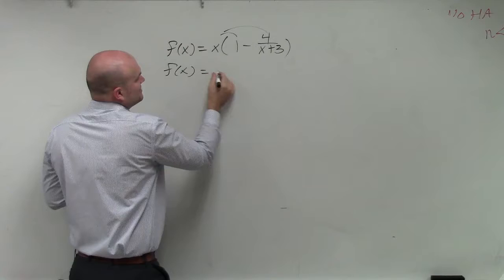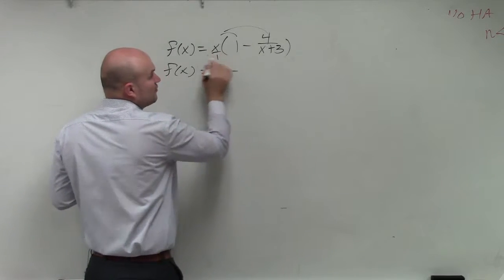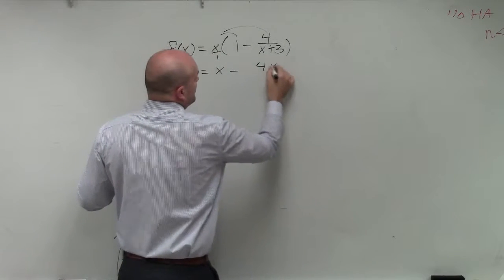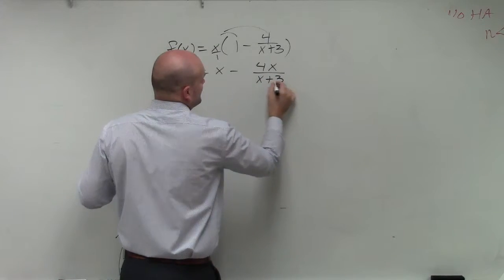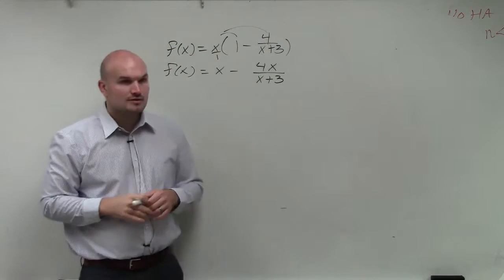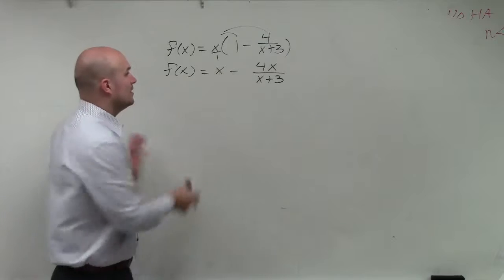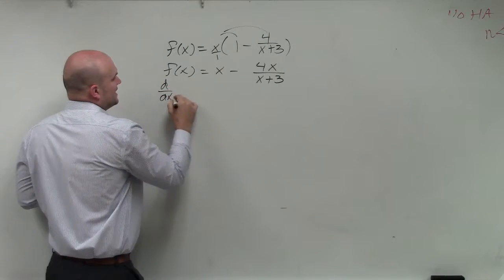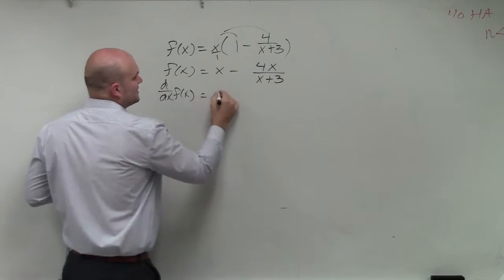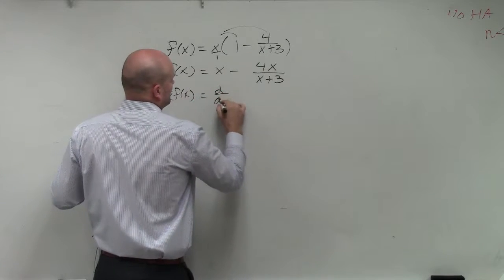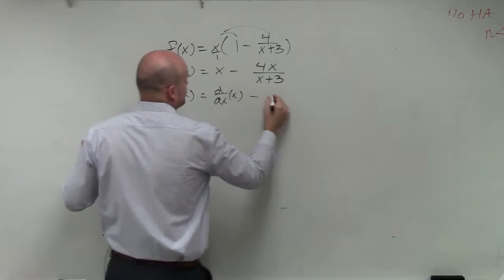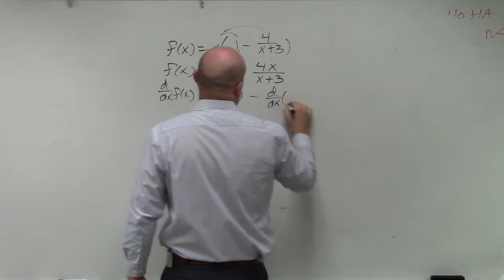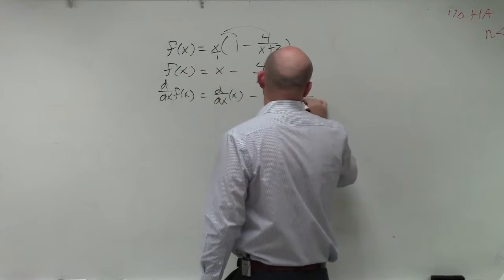So we have f(x) equals x minus 4x over x plus 3. Therefore, if I'm going to take d/dx of f(x), I'm basically going to take the derivative of x minus the derivative of 4x over x plus 3.